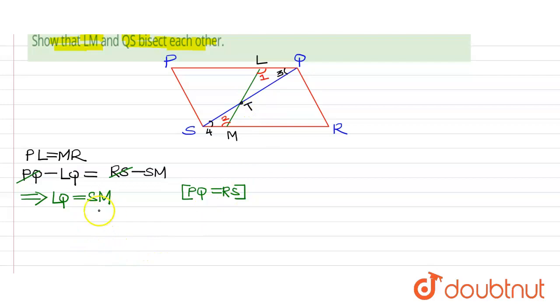So therefore I can say that angle 1 is equals to angle 2 because of alternate angles, interior alternate angles. The reason being PQ is parallel to SR and LM is transversal.